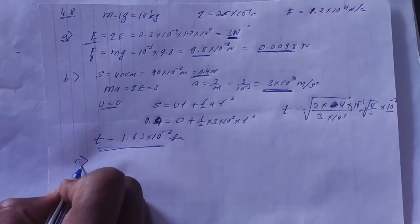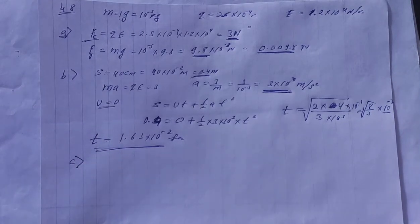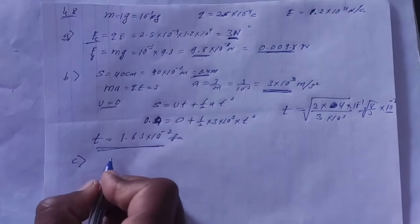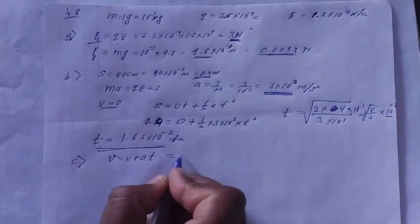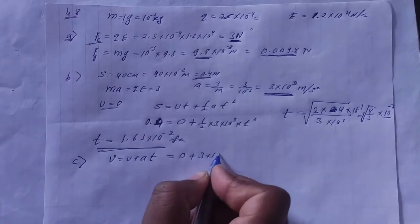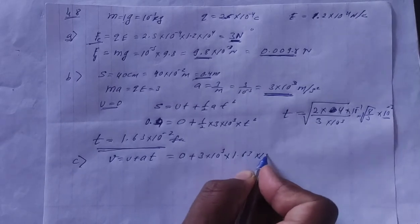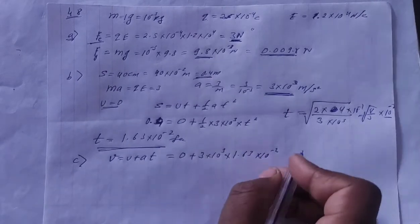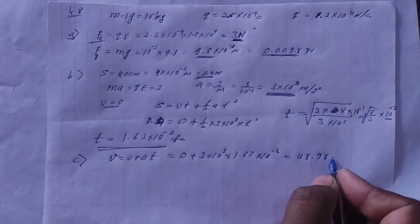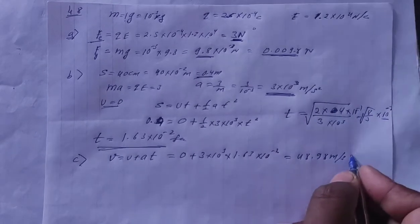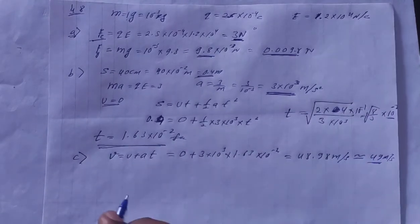Part C asks what will be the speed of the particle after traveling this distance? That is, final speed is asked. So v is equal to u plus at. First equation. u is 0, a is 3 into 10 to the power 3, and t is 1.63 into 10 to the power minus 2. Solving this, we get 48.98 meter per second speed. Approximately, we can write 49 meter per second. This is your speed.